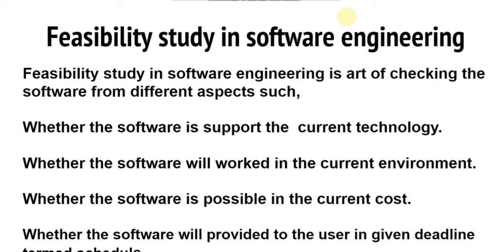When we start a project we invest a lot — money, time, people, and effort. If the software does not support the current technology or available hardware, it is useless. The organization has existing technology equipment, so we must ensure the software supports it. Before going towards software development, we study the current technology available in the organization, because incompatibility may lead to a huge additional cost to purchase supported technology.